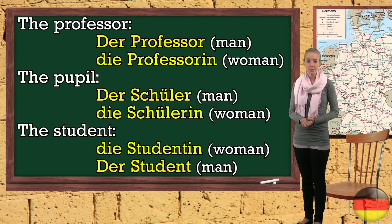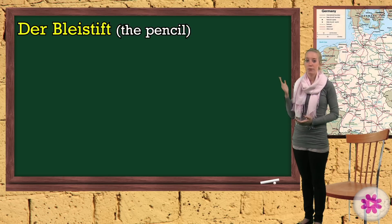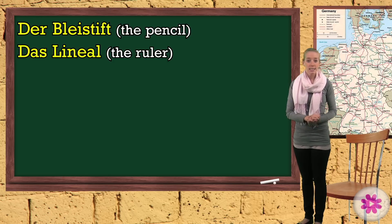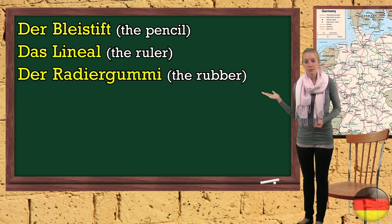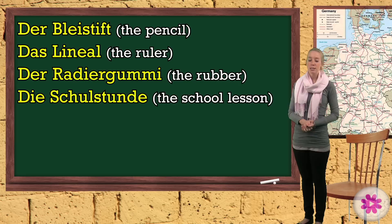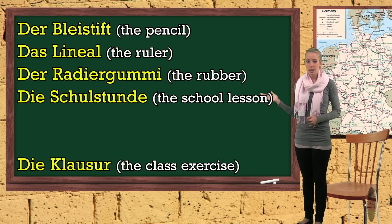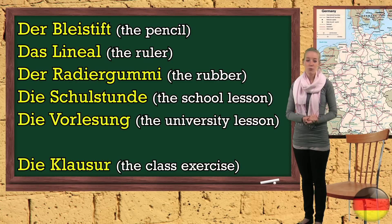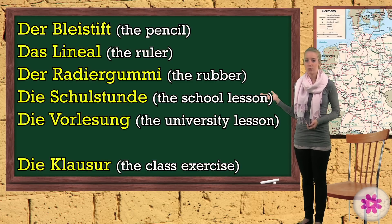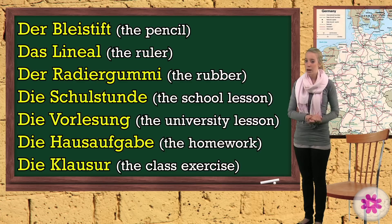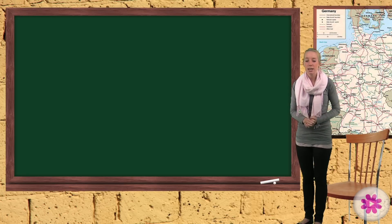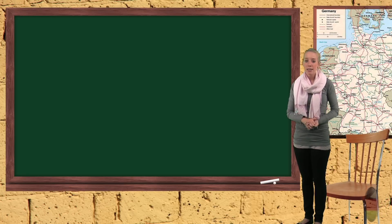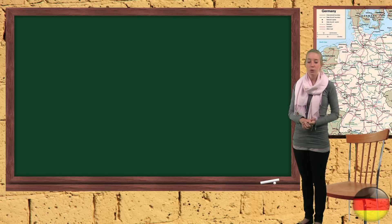There are other words which might be interesting when talking about school. Der Bleistift — the pencil. Das Lineal — the ruler. Der Radiergummi — the rubber. Die Schulstunde — the lesson at school. Die Vorlesung — the lesson at university. Die Hausaufgabe — the homework. Die Klausur — the class exercise. Don't worry — in this course there are no class exercises and no homework either. The lessons are quite short as well, so you hopefully won't get bored.